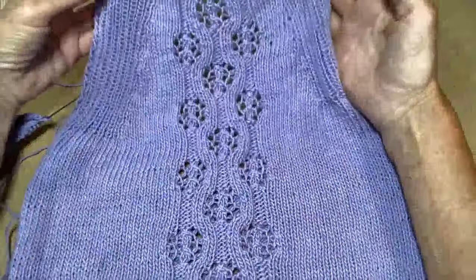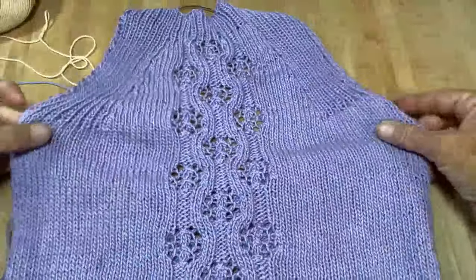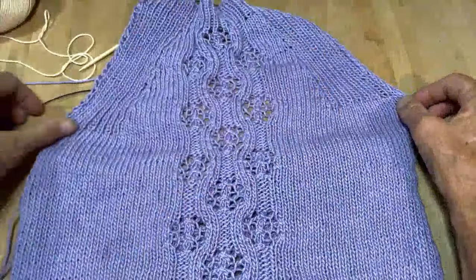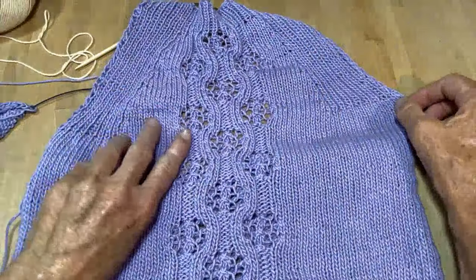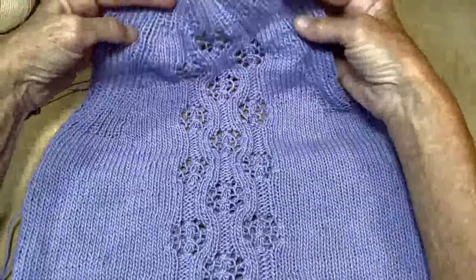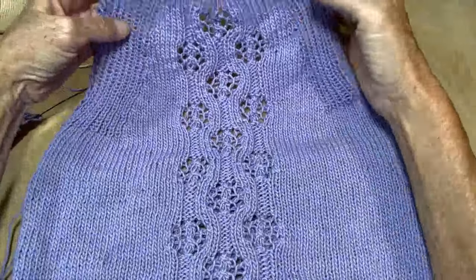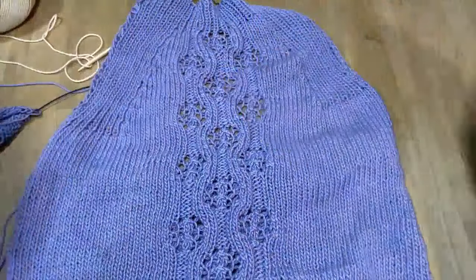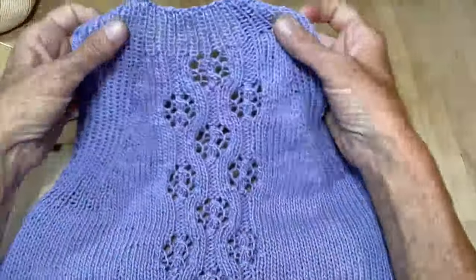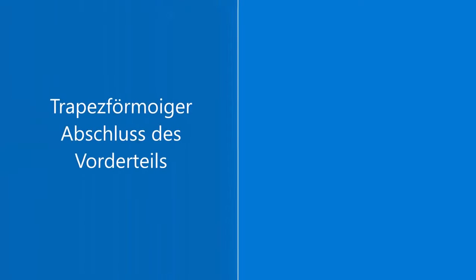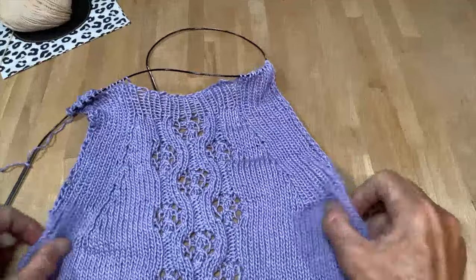Hier ist der Armausschnitt – ab hier hat man dann noch zweimal den Mustersatz. Bei Größe XS kann man entweder etwas später anfangen oder noch zwei Reihen glatt rechts stricken, beziehungsweise drei rechts, drei links, da wo das Muster ist.